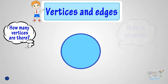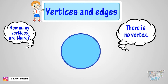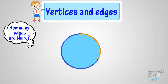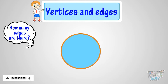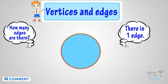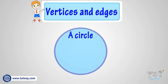So there is no vertex in this figure, or no corner in the figure. Now let's count the edges. We know edges are the lines that join the vertices. Let's count. There is only one continuous line in this round shape that does not end anywhere, so this figure has one edge which is round in shape.